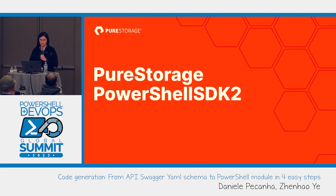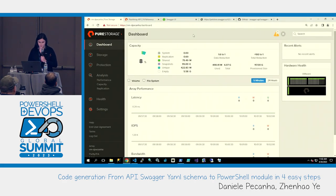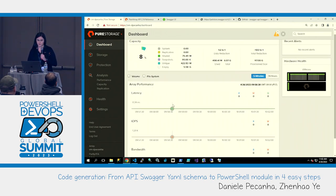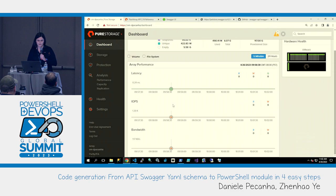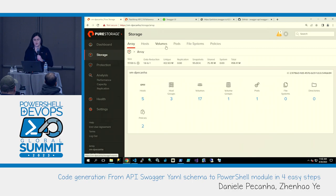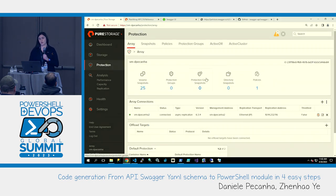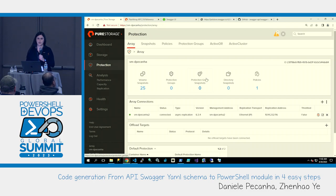A simple introduction about the PowerShell SDK 2. For those who have never seen a Flash Array, that's how the web UI looks — interesting information about the array status, latency, bandwidth. From the menu you can go to storage, see your volumes, create volumes, assign them to hosts, take snapshots. If you want a one-time operation, you can do that through the web UI.